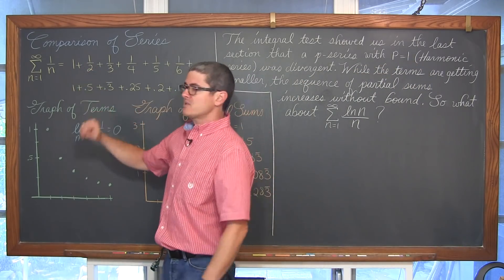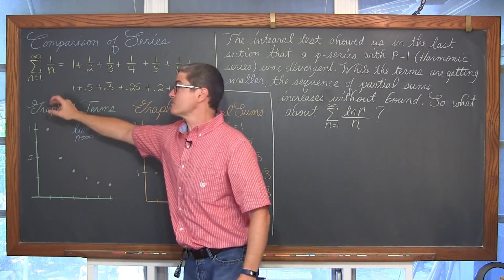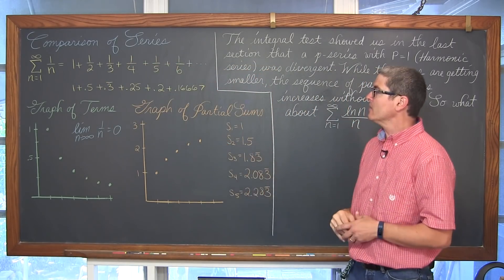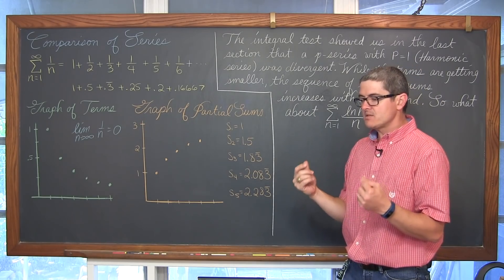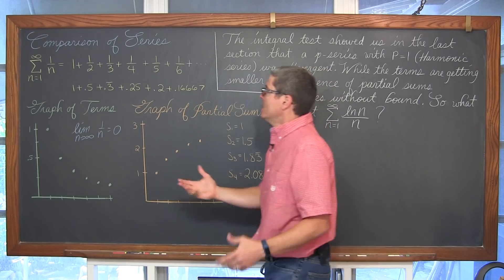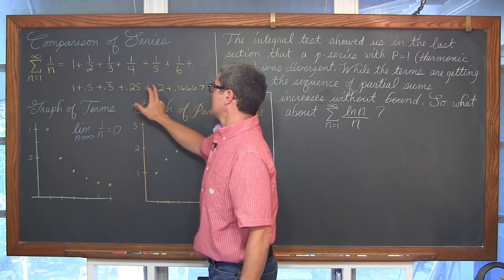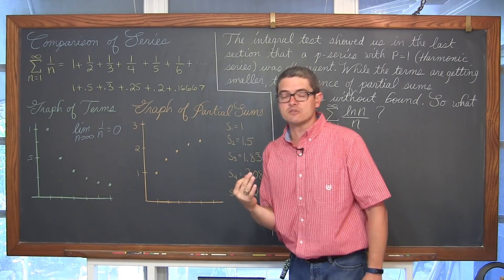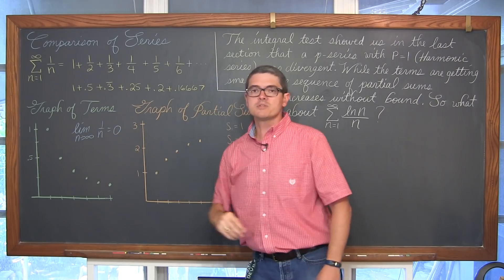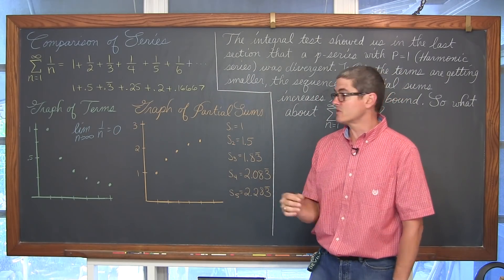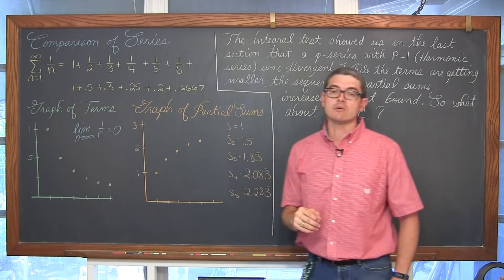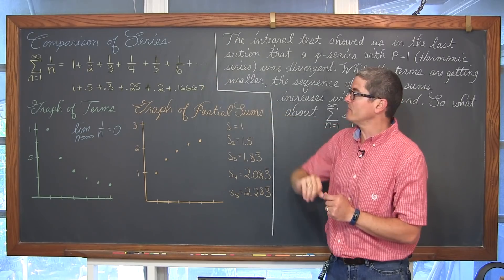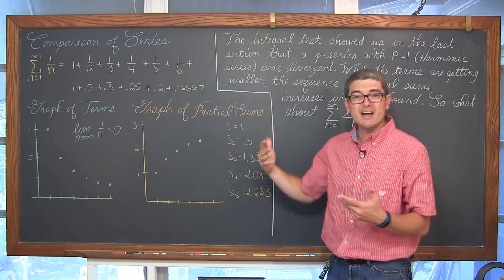We have our harmonic series of 1 over n, giving us terms of 1, 1/2, 1/3, 1/4, 1/5, 1/6, and so on — we're adding those forever. That sequence of partial sums actually never converges. When we worked through the integral test of that harmonic series, we learned that it diverges.